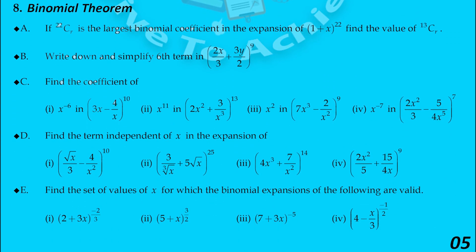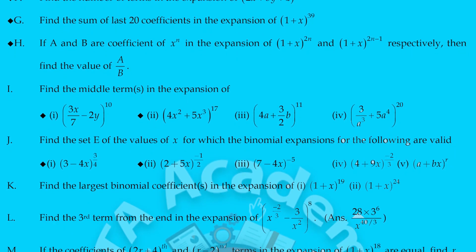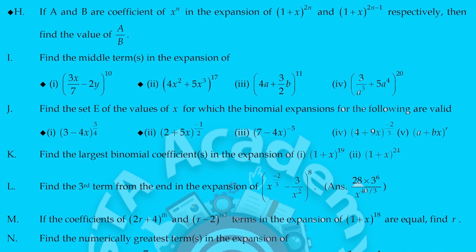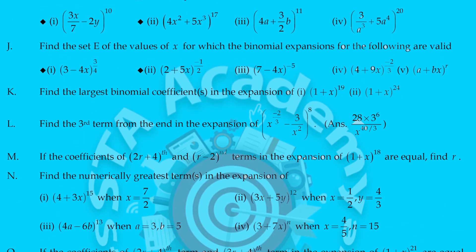Question number 8 covers binomial theorem, a very important chapter. Students practicing for 2A mostly focus on binomial theorem because two LAQs and one VSAQ will come from it. The first question A: 22Cr is the largest binomial coefficient. Question D asks to find the independent term and the coefficient. Also write down the sixth term or fifth term. I have marked important questions F, G, and H on page number 6. Practice all these questions for maximum marks in both intermediate and M-SET exams, as binomial theorem plays a very important role there too — three to four questions in M-SET.